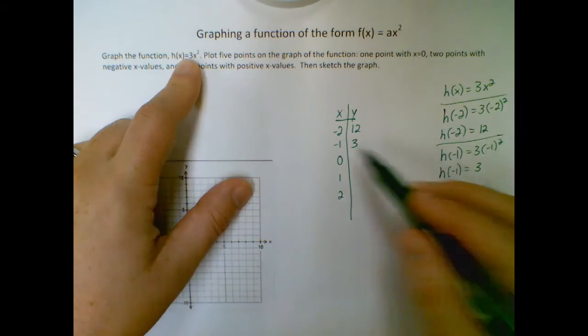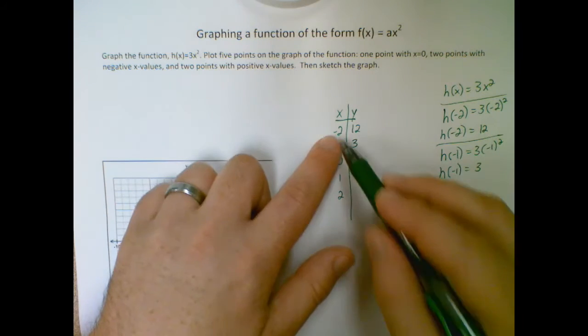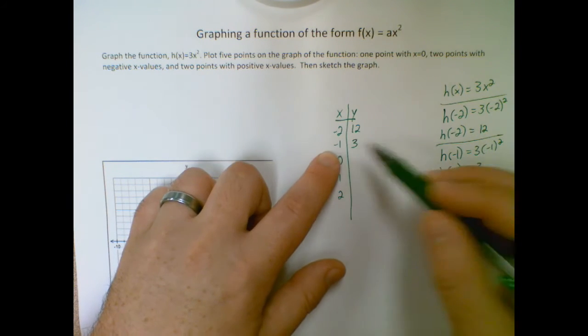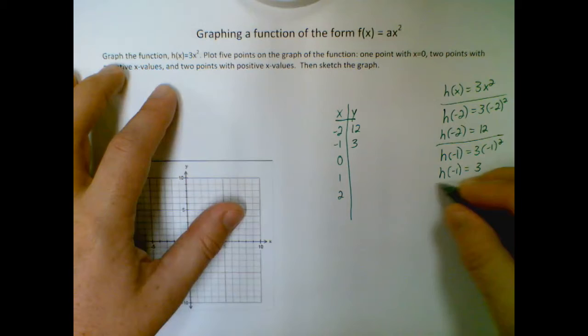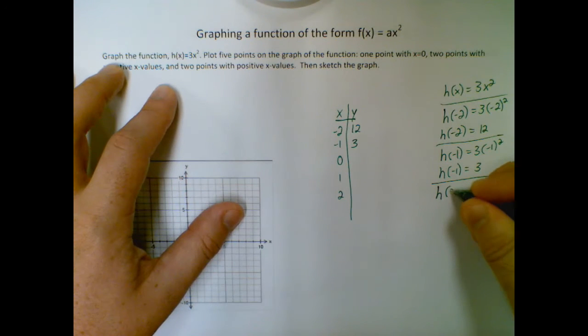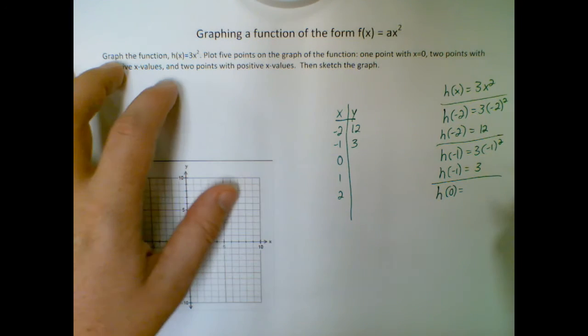So by the way I'm just lining these up so since I plugged in negative two, 12 came out. If I plug in negative one, three came out. That's how I'm lining these up, just as a refresher of how I'm doing that.